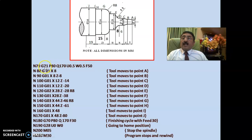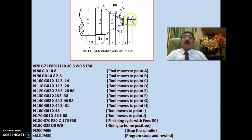After G71 rough turning, an allowance of 0.5 mm remains on X and 0.5 mm on Z. So if the final diameter is 8 mm, after roughing it will be 9 mm — the extra 0.5 mm is removed during finishing. Similarly, 28 becomes 29, 44 becomes 45, and 48 becomes 49 after roughing, with each being reduced to its final size during the finishing cycle.